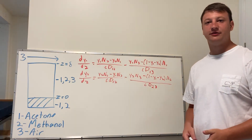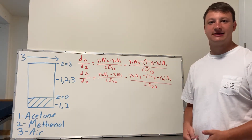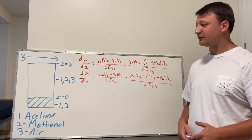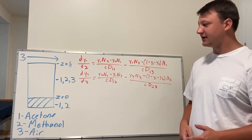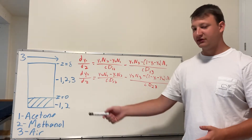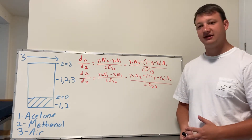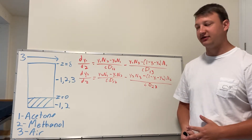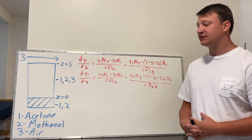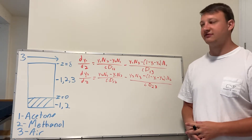Hello, I'm Neil Robertson, working on example 1.17 from the book. In this problem, we have a Stefan tube with a binary mixture of acetone and methanol, which evaporates up the tube and then is pushed out by a constant flow of air.